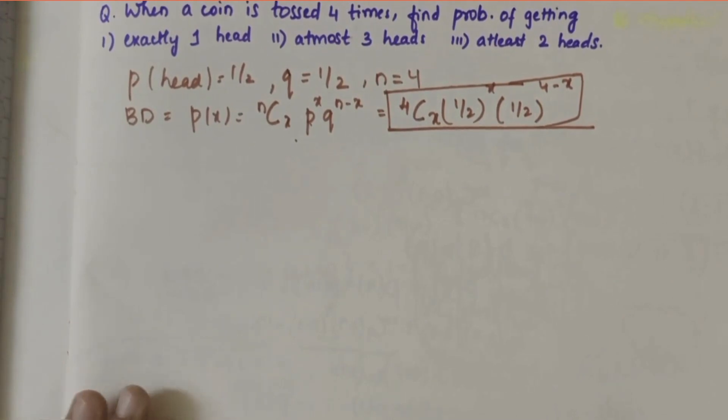In this video, we'll be solving a binomial distribution question. The problem statement is: a coin is tossed four times, find the probability of getting (i) exactly one head, (ii) at most three heads, and (iii) at least two heads.